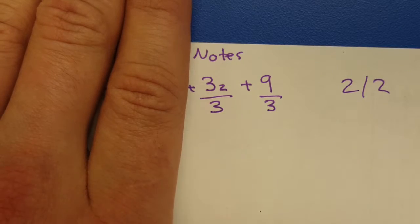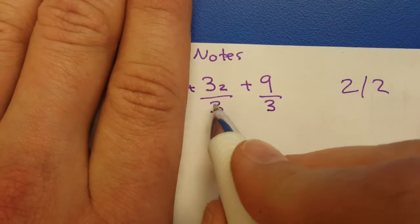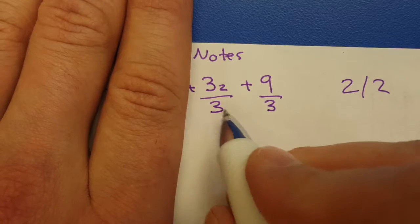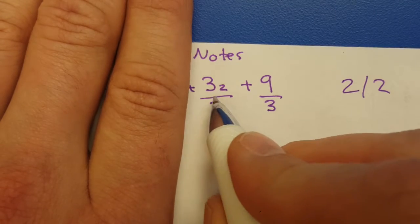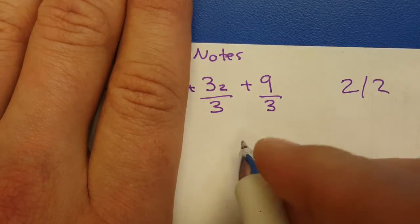So if I lose you like, whoa, what are you doing? You'll see it'll come around. So I'm going to reduce this by factoring, taking out a GCF. The most I could take out of a 3z and a 9 is just a 3.